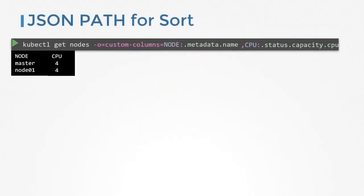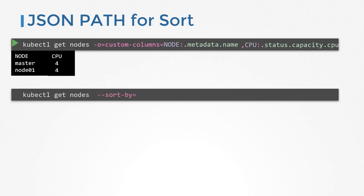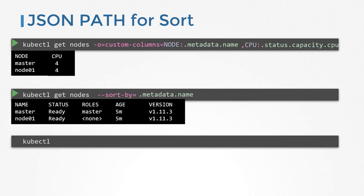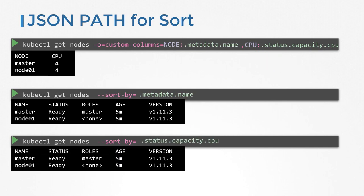Finally, JSON path can also be used while sorting objects by specifying the sort-by option. The kubectl command comes with a sort-by option where you can sort the output based on the value of a property from the JSON formatted properties of each item. When you run kubectl get nodes, specify the JSON path query in the sort-by option to sort based on name or CPU count. Head over to the practice test and practice working with JSON path and some advanced kubectl commands.